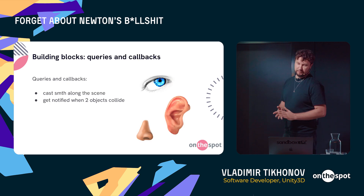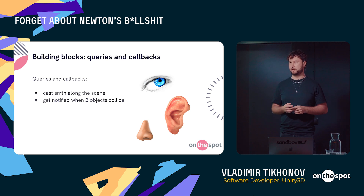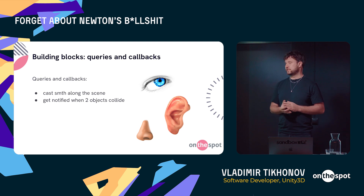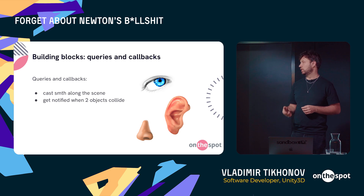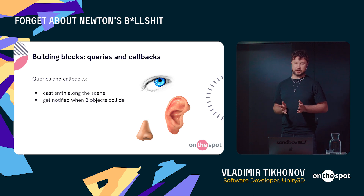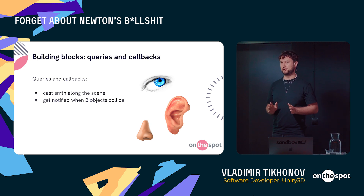The last building block is queries and callbacks — your senses. You can cast something onto the scene, like a ray or a box or a sphere. For example, if you want to know what's under your cursor, you can cast a ray: the start point is the cursor position, the direction is the camera direction, and whatever the ray hits is what's under your cursor. You can also get notifications when two objects collide — for example, if your player collides with lava, he's obviously dead. Using just these building blocks, you can create even complex games.